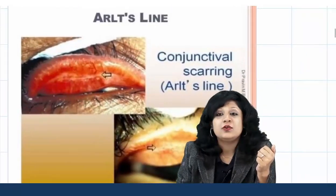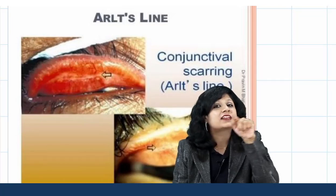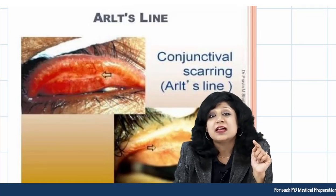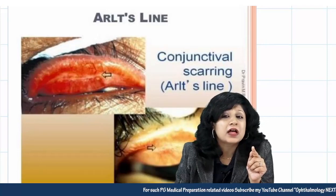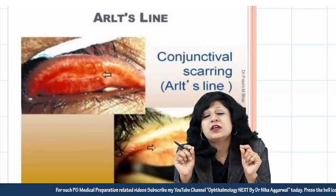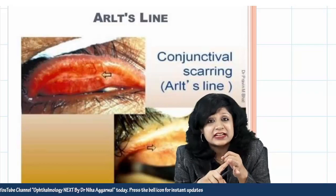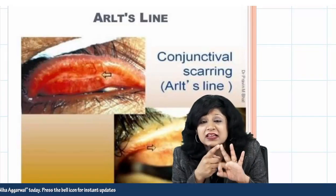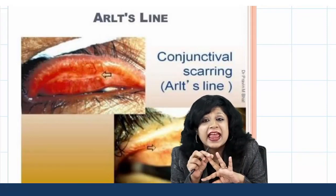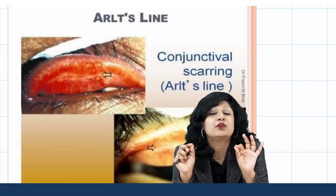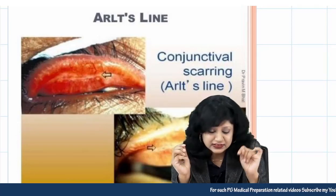Next is the well-known Arlt's line. Arlt's line is the linear scarring in the sulcus subtarsalis that you get in cases of trachoma. Remember the FISTO classification: F for follicular, I for intense inflammation, S for scarring, T for trichiasis, and O for opacity. The S stands for scarring, and the scarring in the sulcus subtarsalis is your Arlt's line.